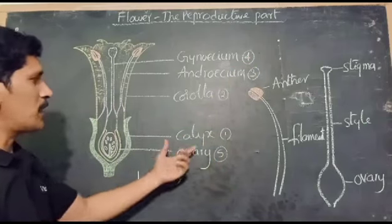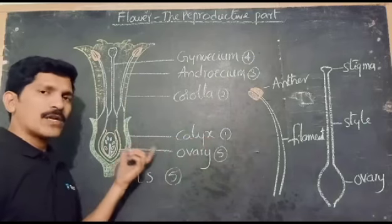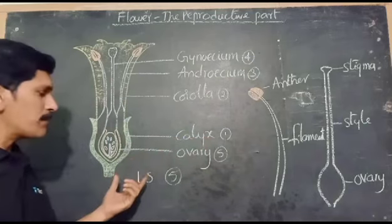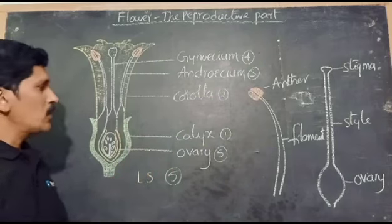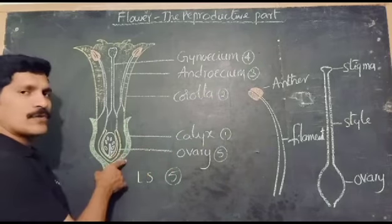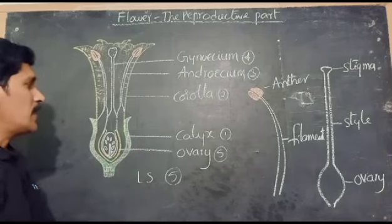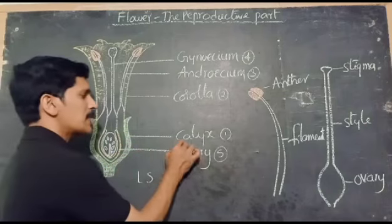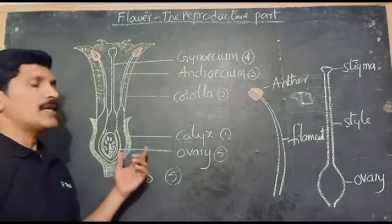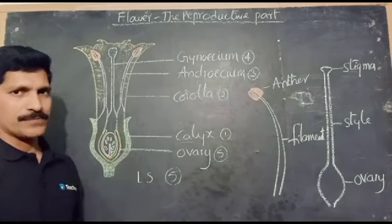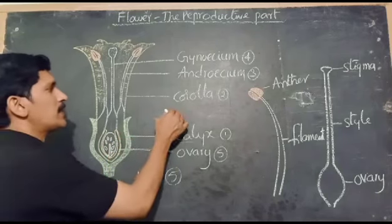The first part, when you observe the flower, is the calyx. Calyx is one of the important parts of the flower, which arranges in the first whorl. This part is usually green in color, and the function of calyx is to protect the internal part of the flower when the flower is in the bud stage.